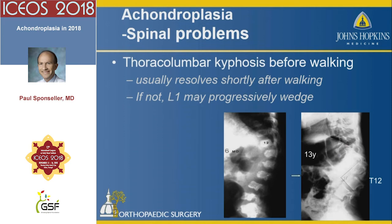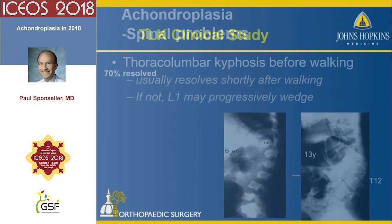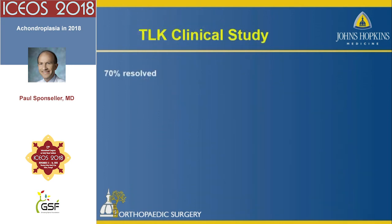Here's an example of how sometimes it goes wrong. This is a patient I saw at 6 months of age and then not again until 13 years of age. She ended up with mild wedging of T12 at 6 months, which became severe by the time she was 13 and required significant vertebral column surgery.